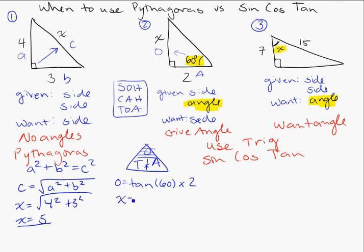So, in this case, X is equal to tangent 60 times 2. I'm using the calculator. And what do we get? We get 3.46. So, there's our answer for X.